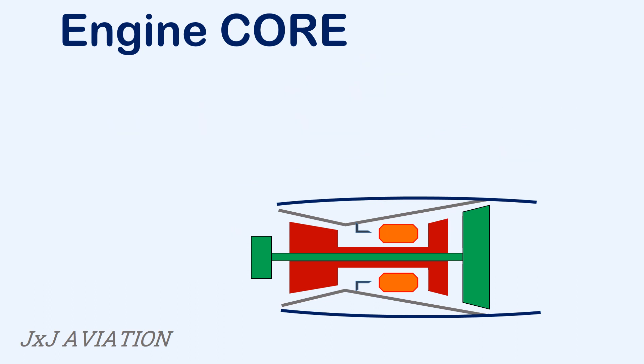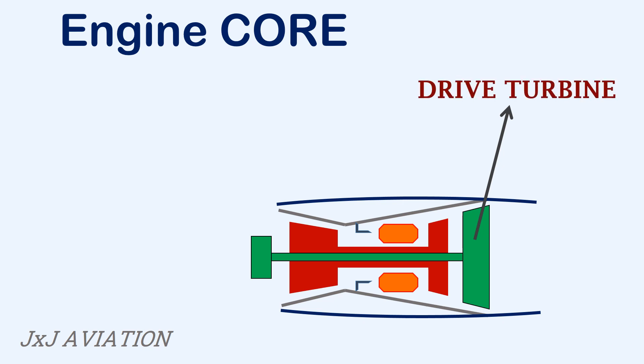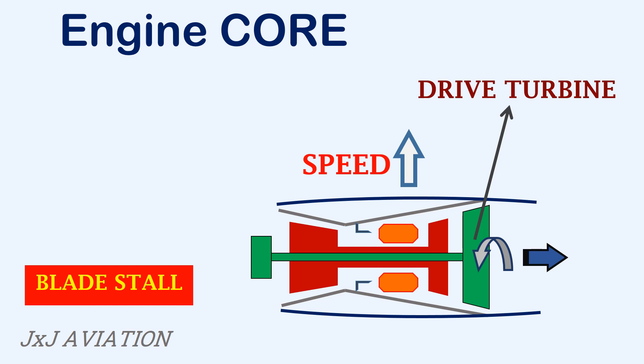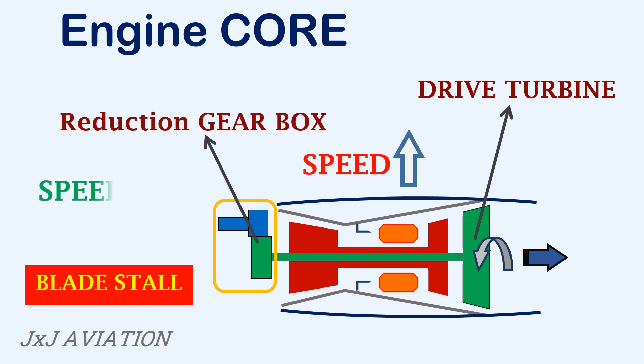On a turboprop engine, there is an additional turbine called the drive turbine. Here the gases expand further, causing a decrease in pressure and the rotation of the turbine. This turbine extracts almost all the pressure energy from the incoming gases, so very little thrust is generated at the exhaust. This turbine rotates at a very high speed, so it cannot be connected directly to the propeller as this would cause the blades to stall. So the turbine is connected to a reduction gearbox, which reduces the speed of the shaft so the propeller operates more efficiently.